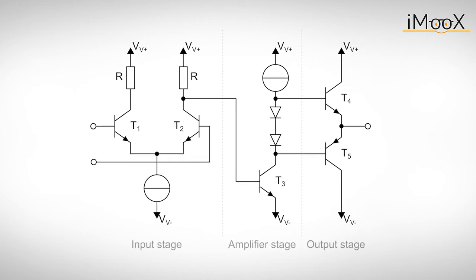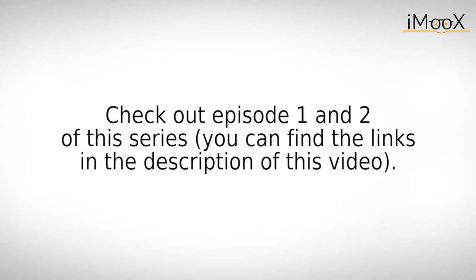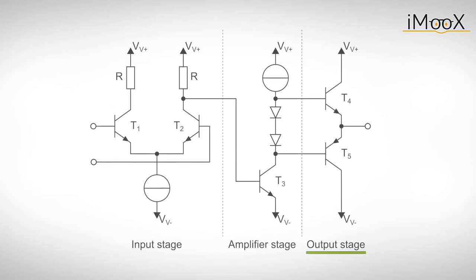So we divide the operational amplifier into three different stages. The input stage is located on the left hand side and is responsible for detecting the difference between two input signals. The amplifier stage with its high voltage gain boosts the signal coming from the input stage. If you want to know more about transistor amplifiers, make sure to check out our other videos. The output stage allows the operational amplifier to source and sink large currents at its output while maintaining its output voltage.